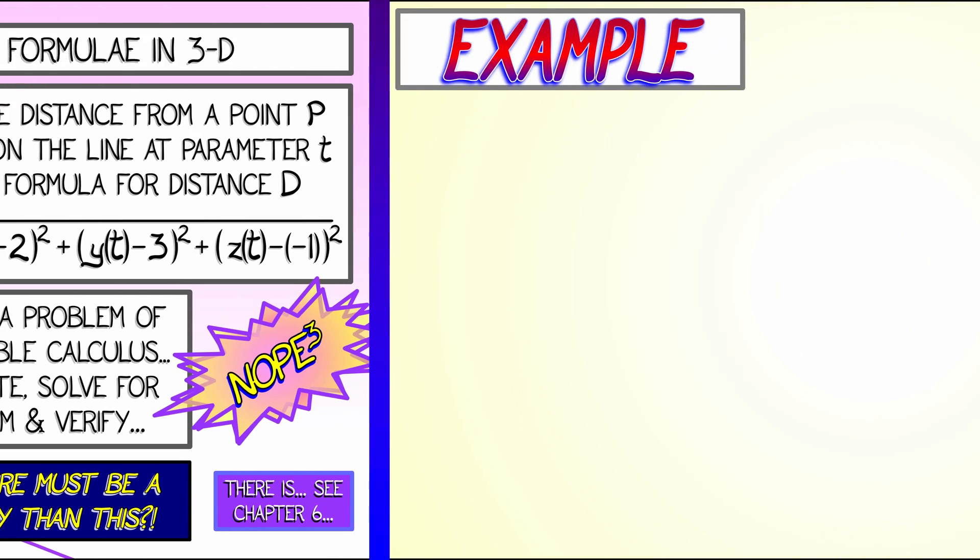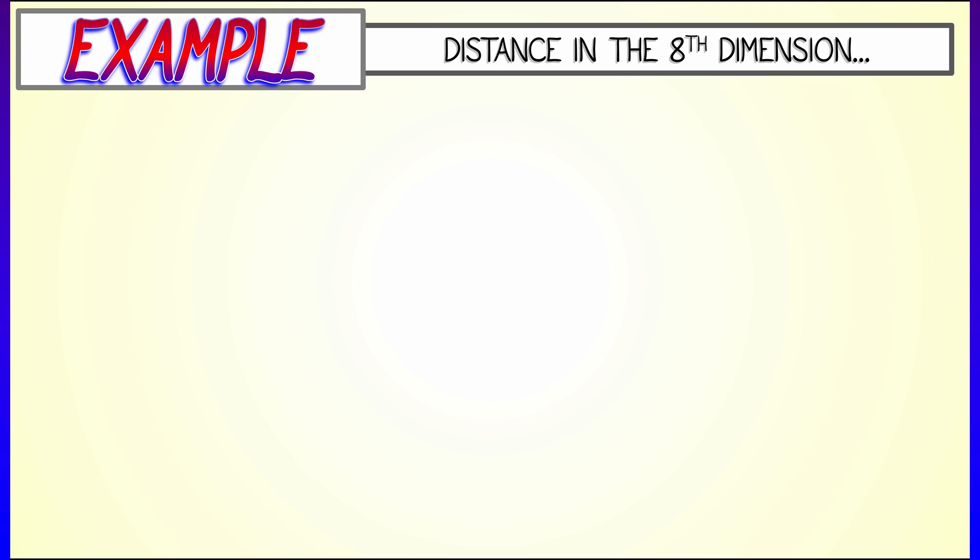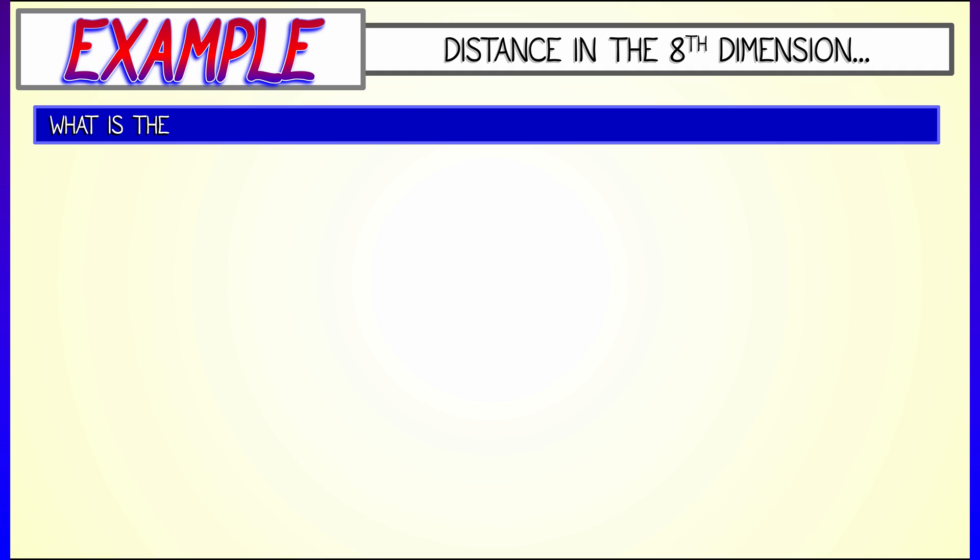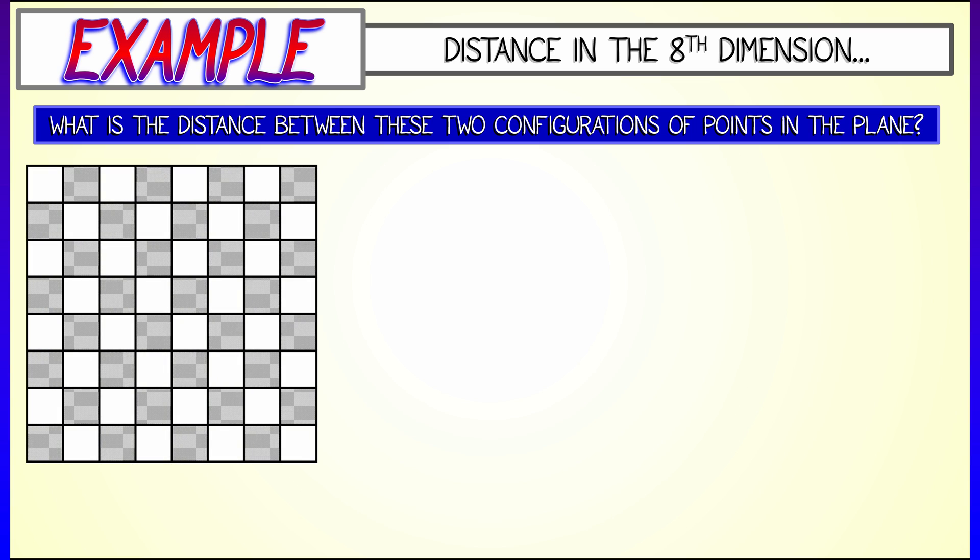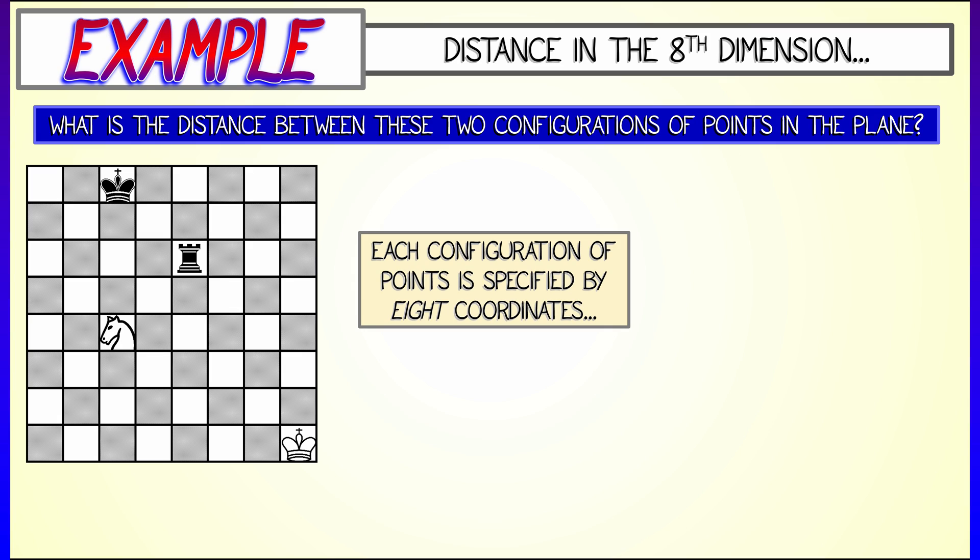But for now, we're going to continue thinking about distances. In this case, moving up to the eighth dimension, where we're going to look at distances between configurations of points in the plane. Let's say you have a two-dimensional plane, and I put down a number of objects. Maybe robots, maybe chess pieces, something like that. But I have four of them.